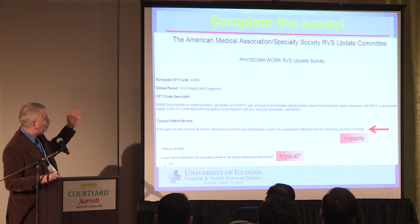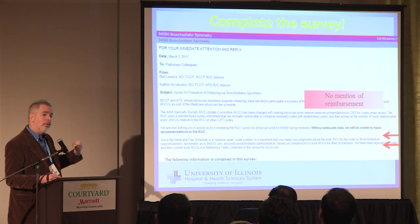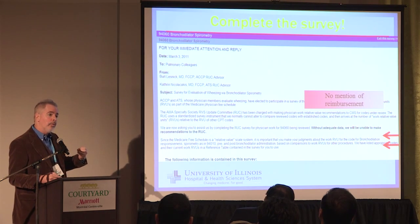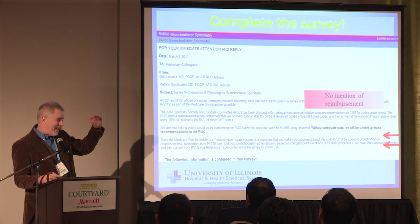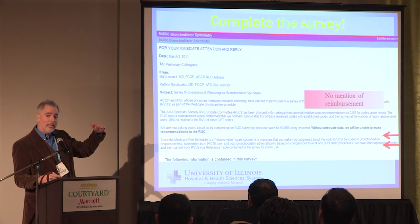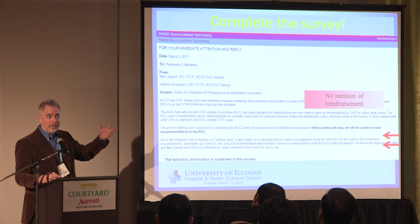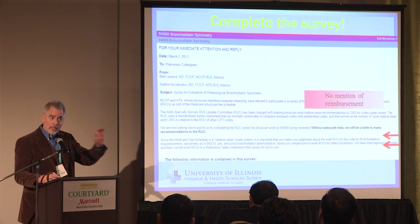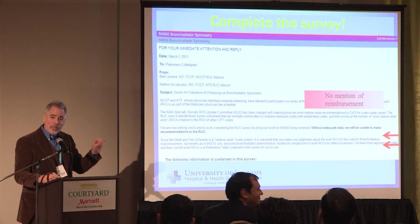Here is an example of a survey you might get — what's typical. It's not a reimbursement thing; you're comparing to existing codes. Broncs start at a very low level, so you're either going to be a little bit up or a little bit down from that. You're never going to be compared to aortic valve replacement. From a value perspective, breathing is apparently not important.